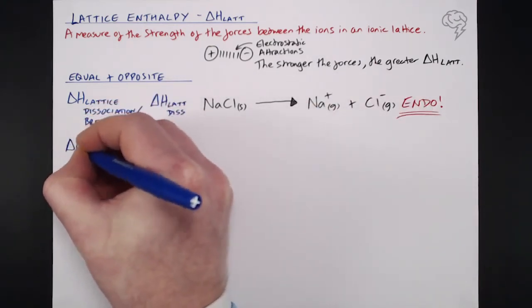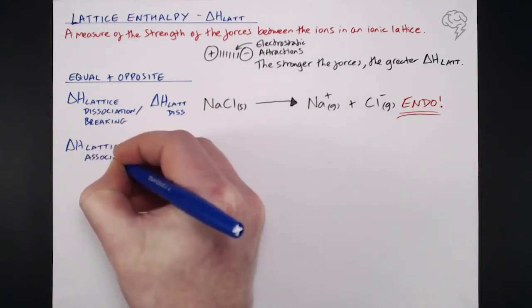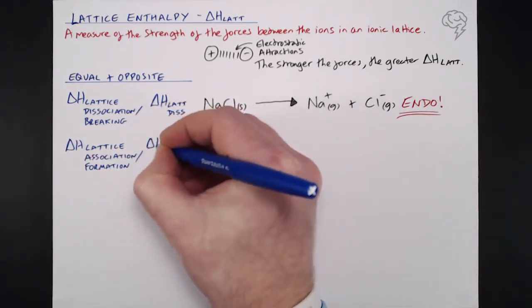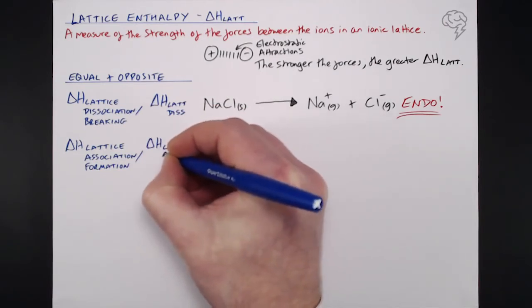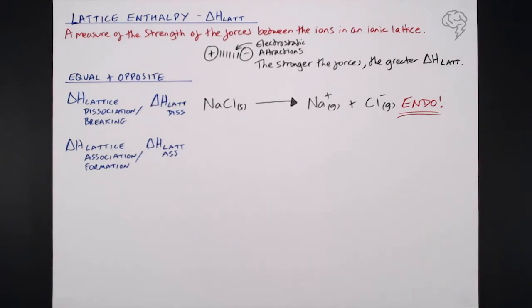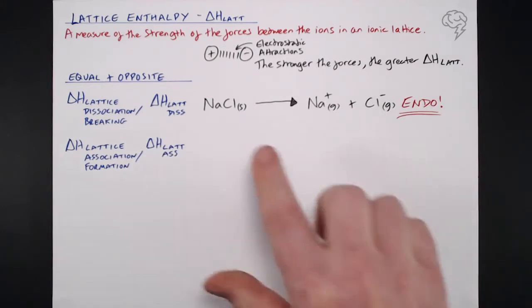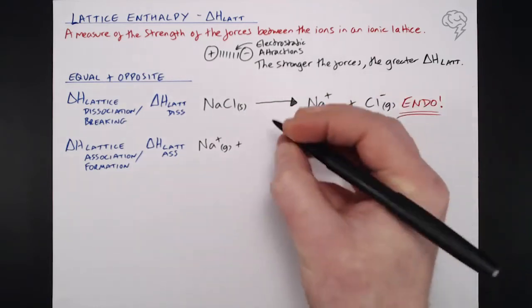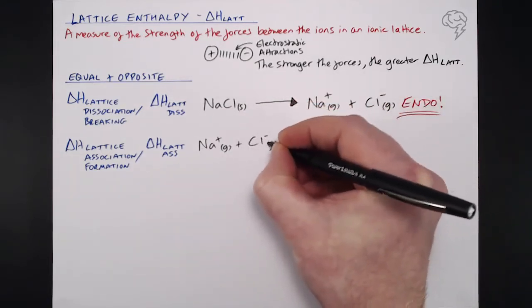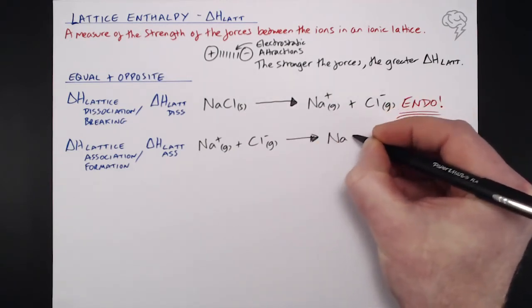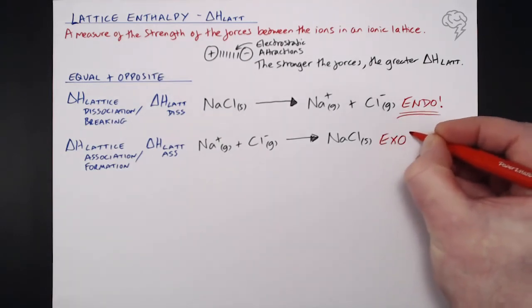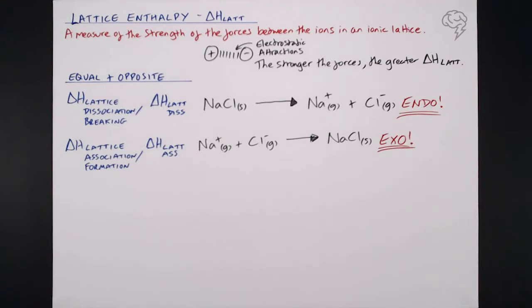So that's our lattice dissociation or breaking. On the flip side, we've got our Delta H lattice association or formation, bringing it together, the opposite of what we've just looked at. I'm going to call this Delta H Lat As for association, bringing our salt together. It is literally the opposite of what we've got here. We take our gaseous ions, Na plus gas and Cl minus gas, and they come together to form our salt or ionic substance in its standard state. When these two ions come together, they release energy. This is a massive, excessively exothermic process, releasing loads of energy.